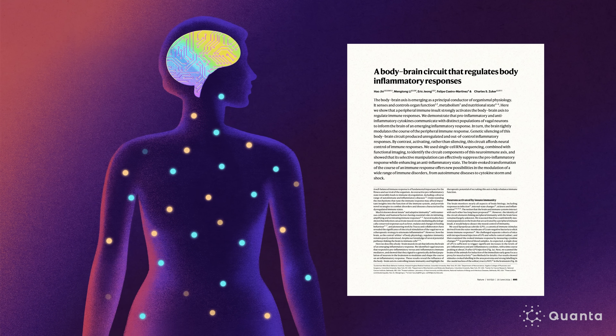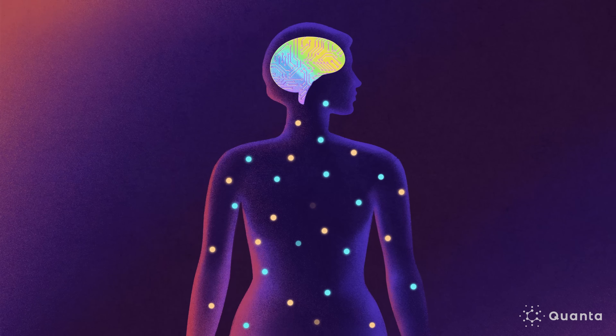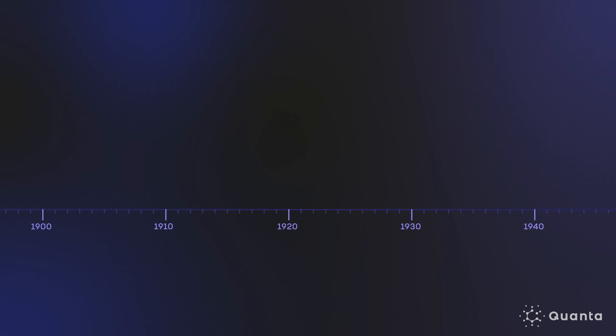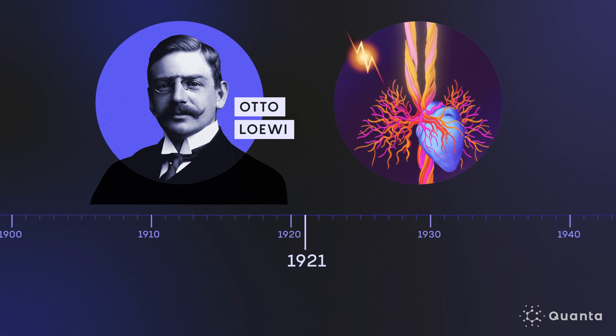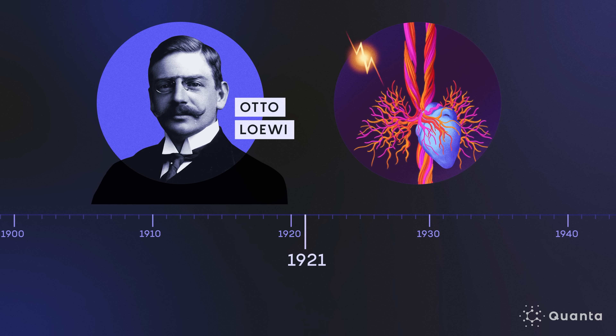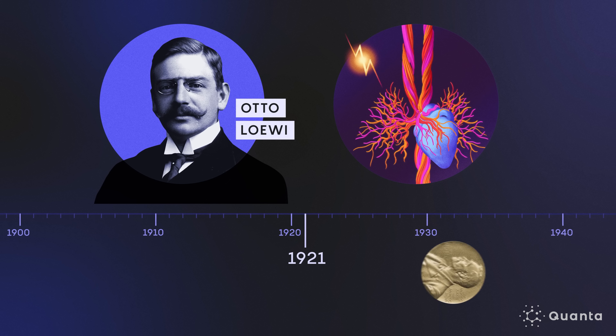A team of scientists published research revealing a surprising new vagal connection between the brain and the body's immune system. There's no question that the whole set of diseases and disorders previously thought to be diseases of the body are undoubtedly going to emerge as diseases of body-brain communication. In 1921, physiologist Otto Loewi discovered that stimulating a frog's vagus nerve slowed its heartbeat. He named the associated signaling chemical Vagusstoff and later won the Nobel Prize.